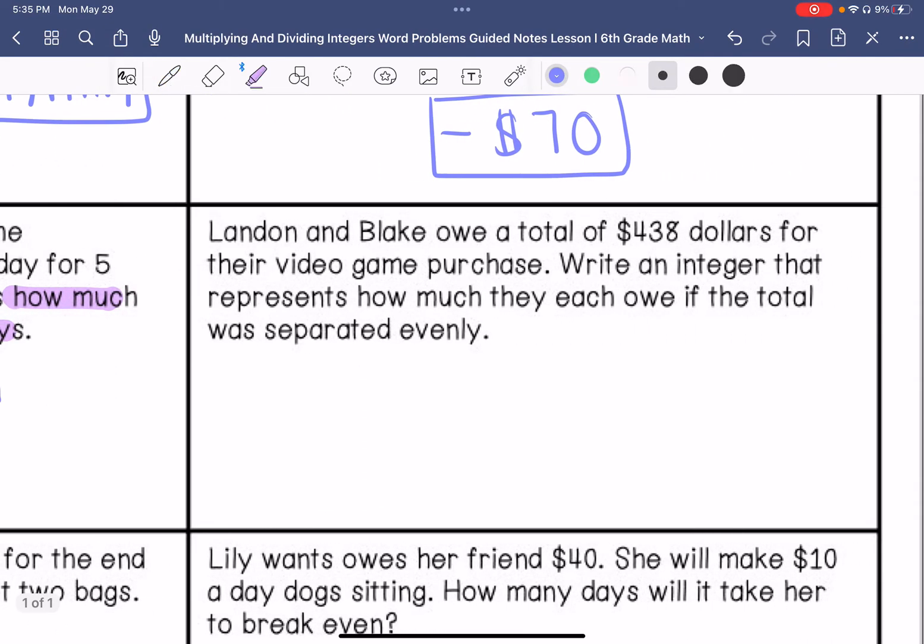Landon and Blake owe a total of $438 for their video game purchase. Write an integer that represents how much each owe if the total was separated evenly. So it's going to be separated by 2. So we now have negative 438 divided by 2. Our answer is going to be negative.